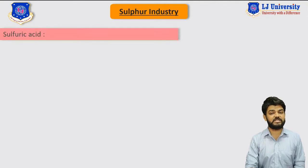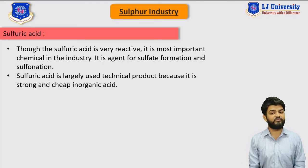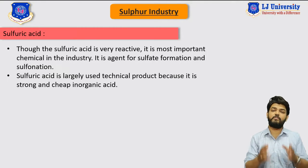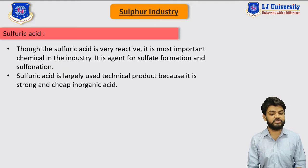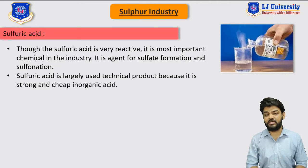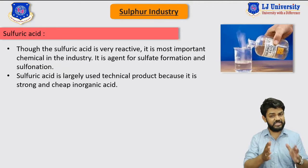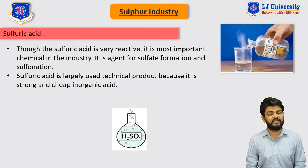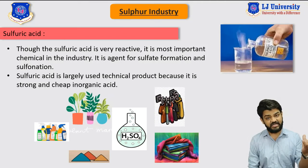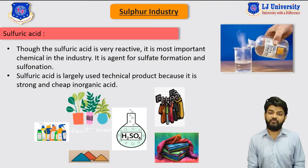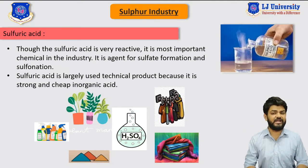In this video we are going to discuss the majorly used product of sulfur, which is sulfuric acid. Despite being highly reactive, it is the most important chemical in industries. Sulfuric acid is used for sulfate formation by the sulfonation process and is an extremely used technical product because it is cheap and an inorganic material. It finds applications in the fertilizer industry, color industry, dye industry, detergent industry, and fabric industry.